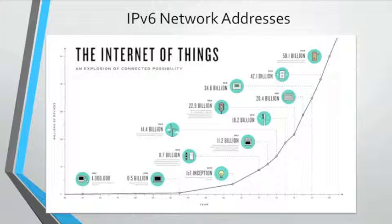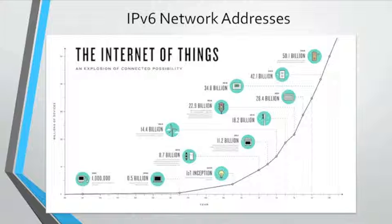The Internet of today is significantly different than the Internet of past decades — it is more than email, web pages, and file transfer between computers. The evolving Internet is becoming an Internet of Things. No longer will the only devices accessing the Internet be computers, tablets, and smartphones. The sensor-equipped, internet-ready devices of tomorrow will include everything from automobiles and biomedical devices to household appliances and natural ecosystems.